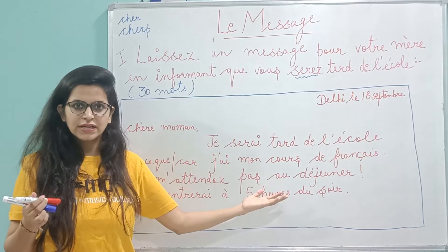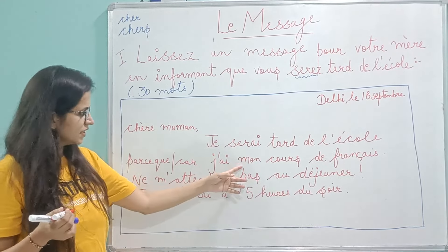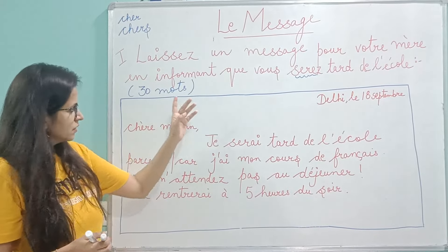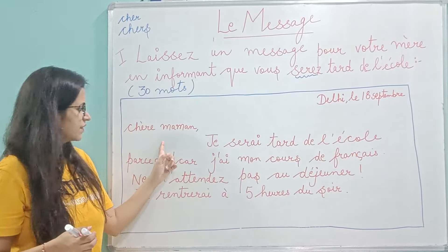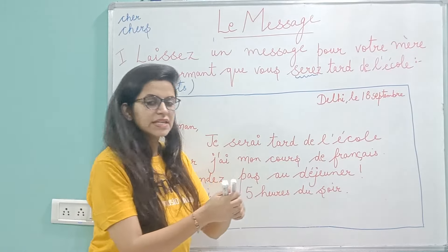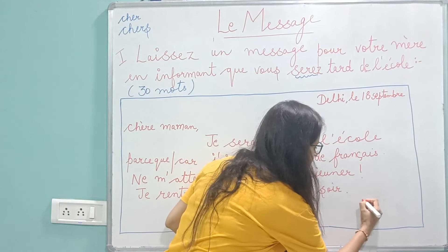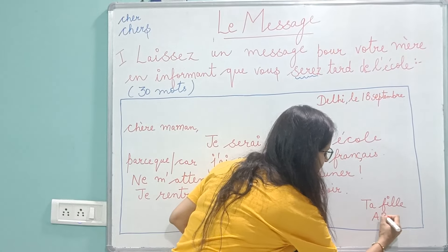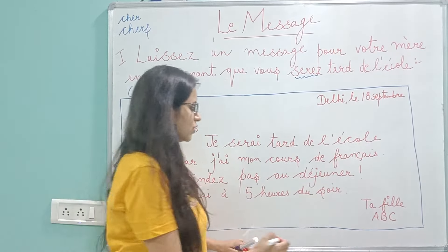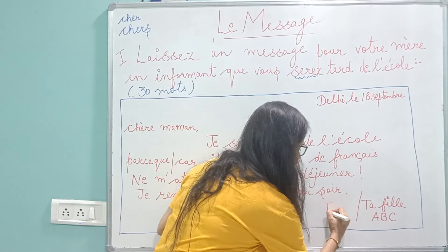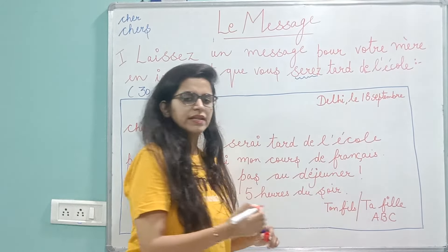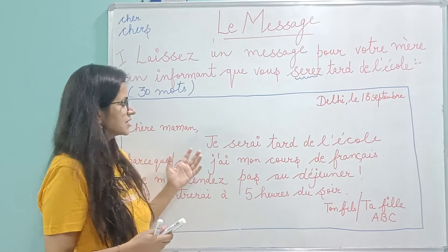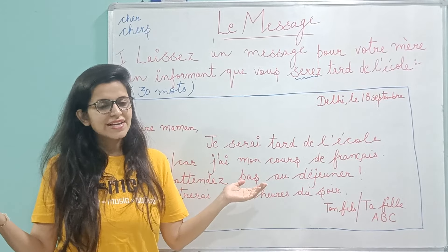One more important thing: whenever it's message writing or invitation writing in French, you never ask 'How are you?' — you just give the reason directly and it is done. We have given the reason, added one or two more lines, so it is more than sufficient. For the ending line, after giving the place and content, you can close by writing 'ta fille' meaning your daughter, or 'ton fils' meaning your son, and then write your name. Keep practicing, and I'll see you in the next video.